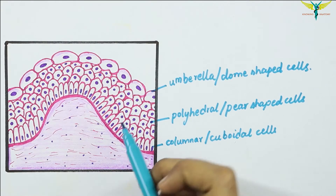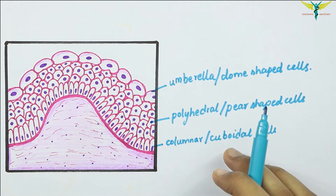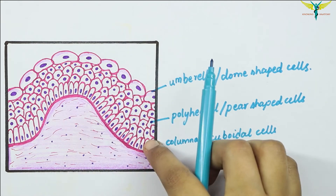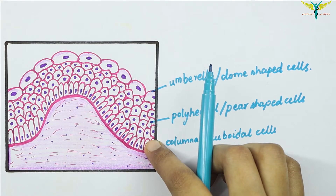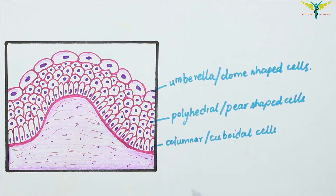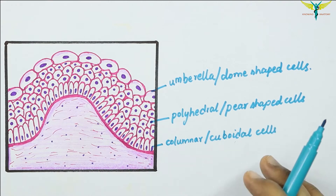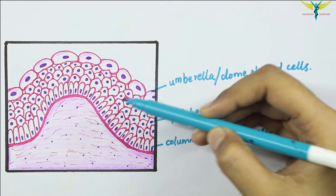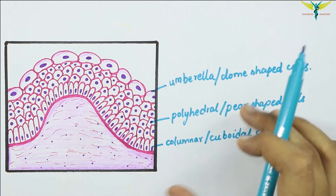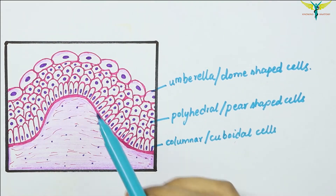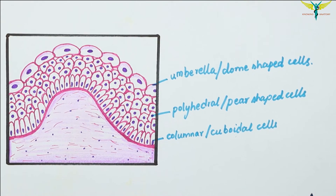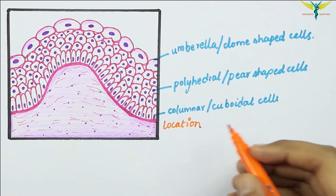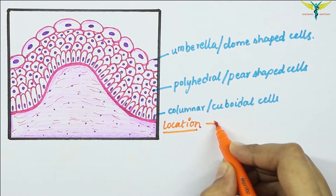The transitional epithelium is present in the urinary bladder, so the cells can be stretched without losing integrity. When this epithelium is stretched, the multi-layered epithelium appears thinner and the cells become flattened.